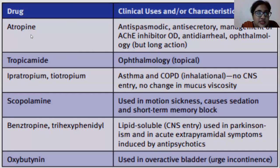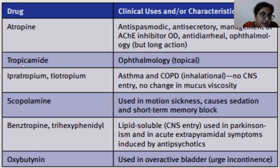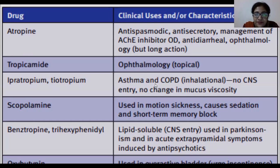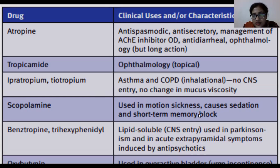Atropine is used for anti-spasmodic, anti-secretory, management of ACE inhibitor effects, and ophthalmology. Tropicamide is used for ophthalmology topically. Then there is ipratropium and tiotropium, used to treat asthma and COPD — given by inhalation, with no CNS entry and no change in mucus viscosity. Scopolamine is used in motion sickness and causes sedation and short-term memory block.